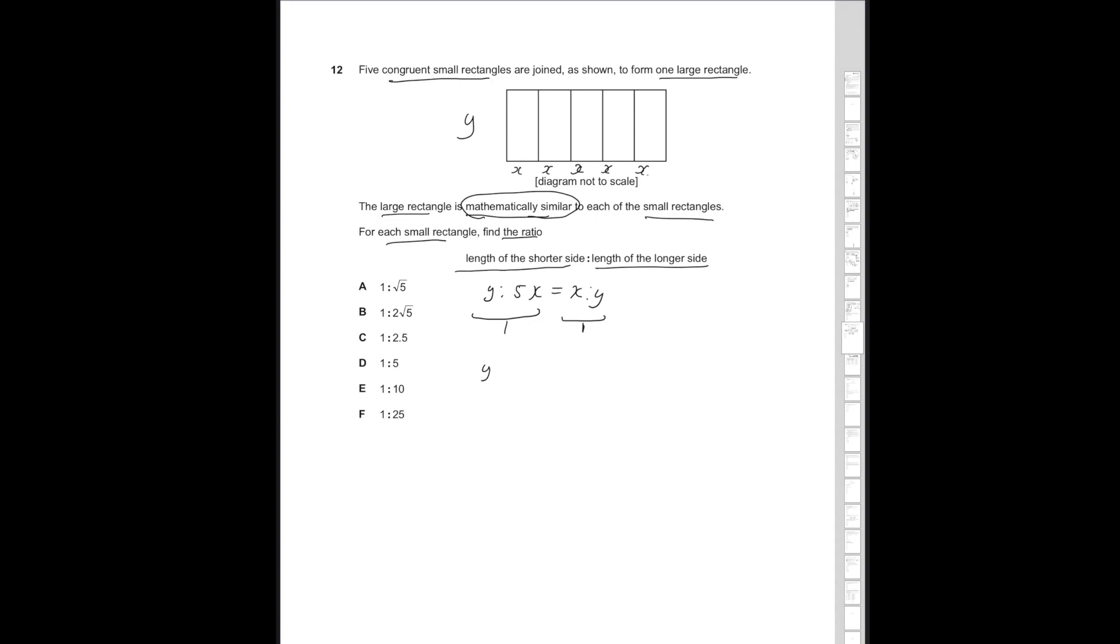With ratios, we can express them as fractions. So we can say that y over 5x is equal to x over y. Therefore, y squared is equal to 5x squared, y is equal to root of 5x squared. Now, because we're looking for a ratio in the form of 1 to something, and because x is the smaller side for each small rectangle, let's say that x equals 1, and y is going to be equal to root 5.